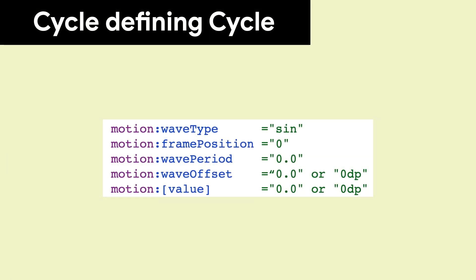But there are five attributes that define the cycle: waveType, framePosition, wavePeriod, waveOffset, and the value that the wave is going to manipulate.